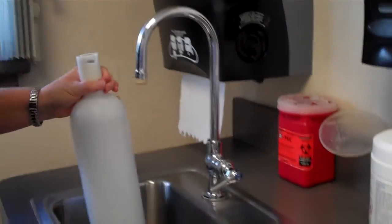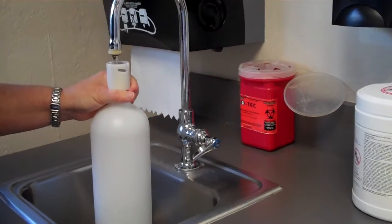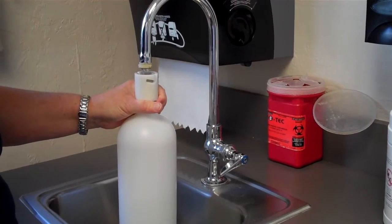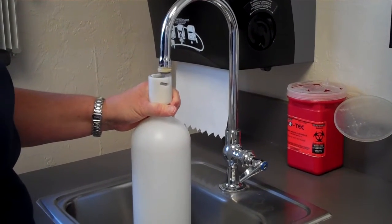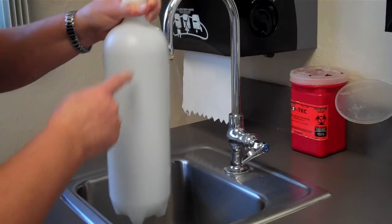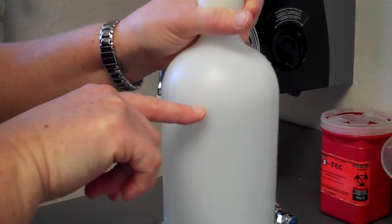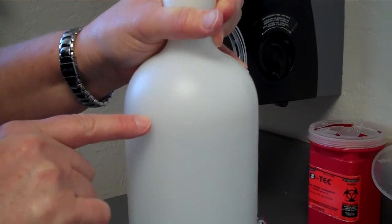Then you'll place the container underneath the sink to fill directly up to the top of the water line, which is located right here. There's a water line there. Then you will place it back onto the unit.